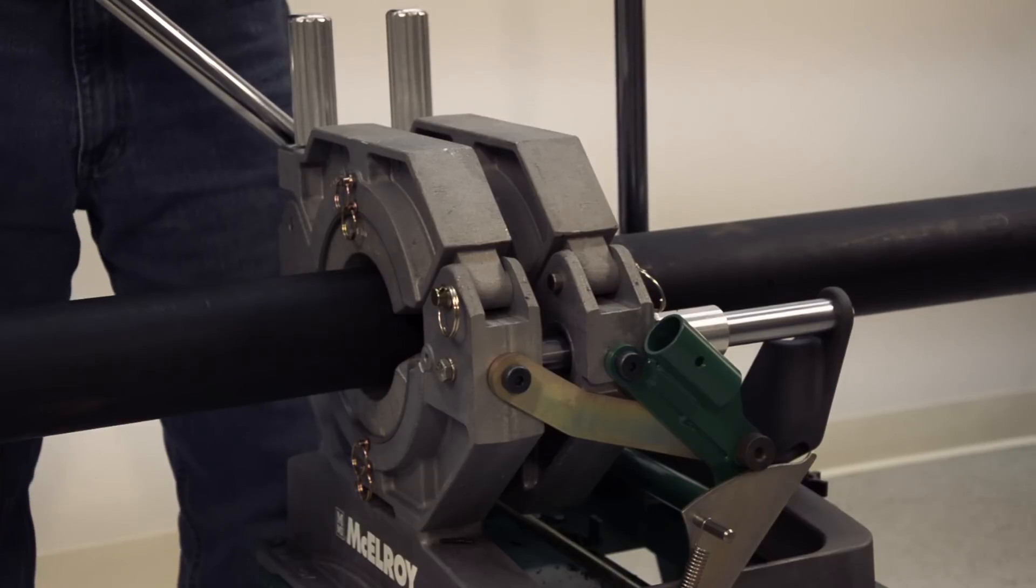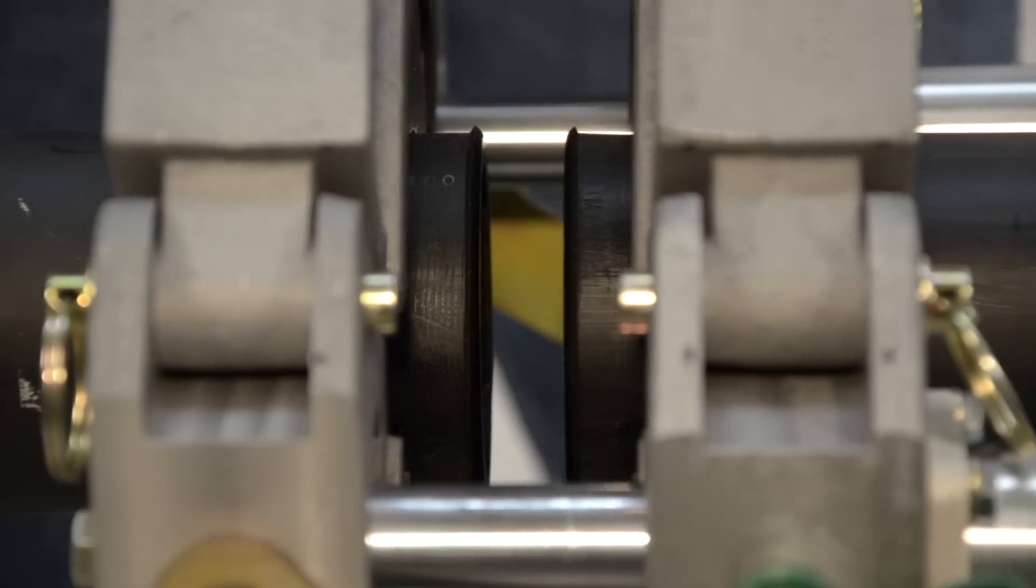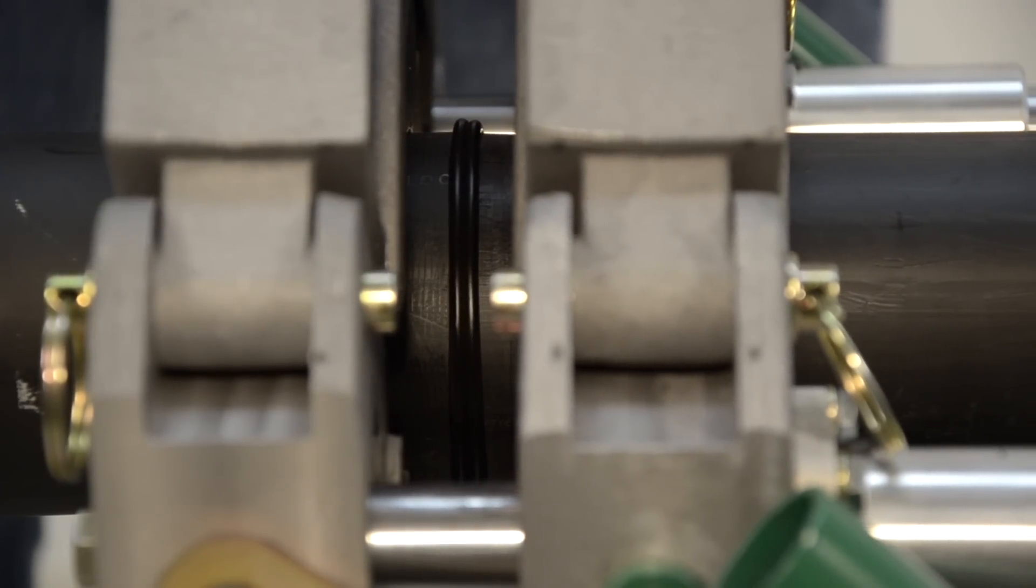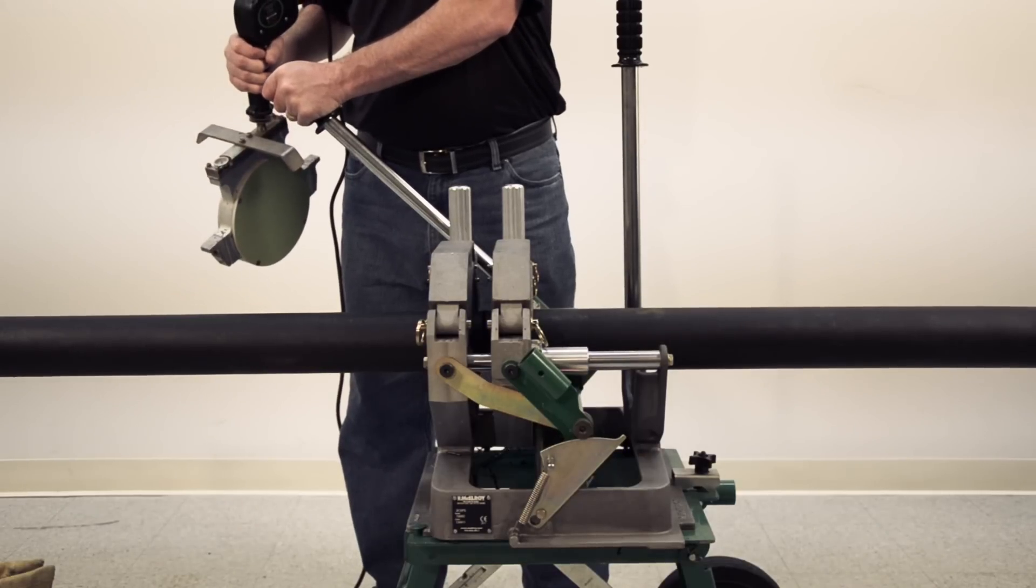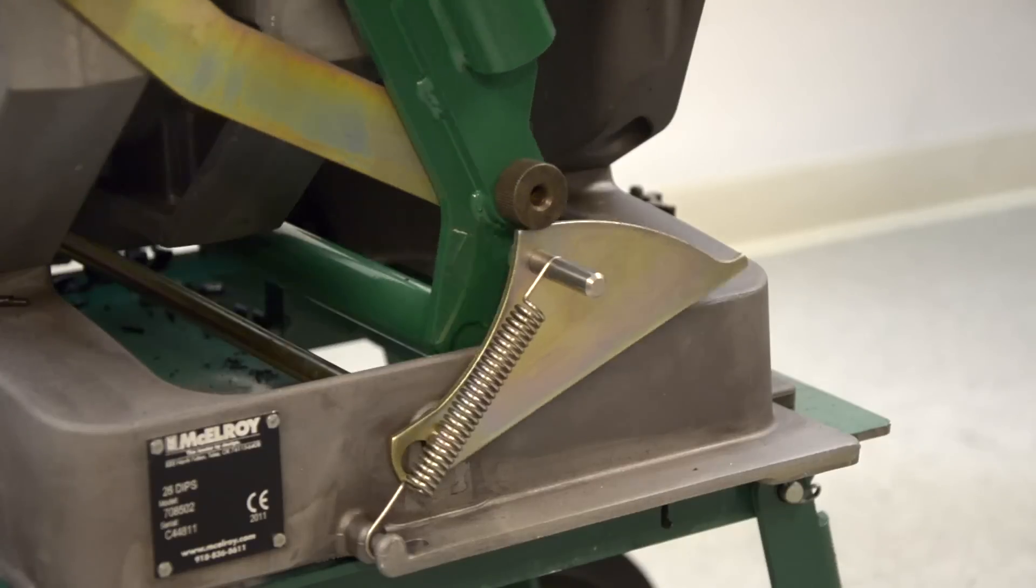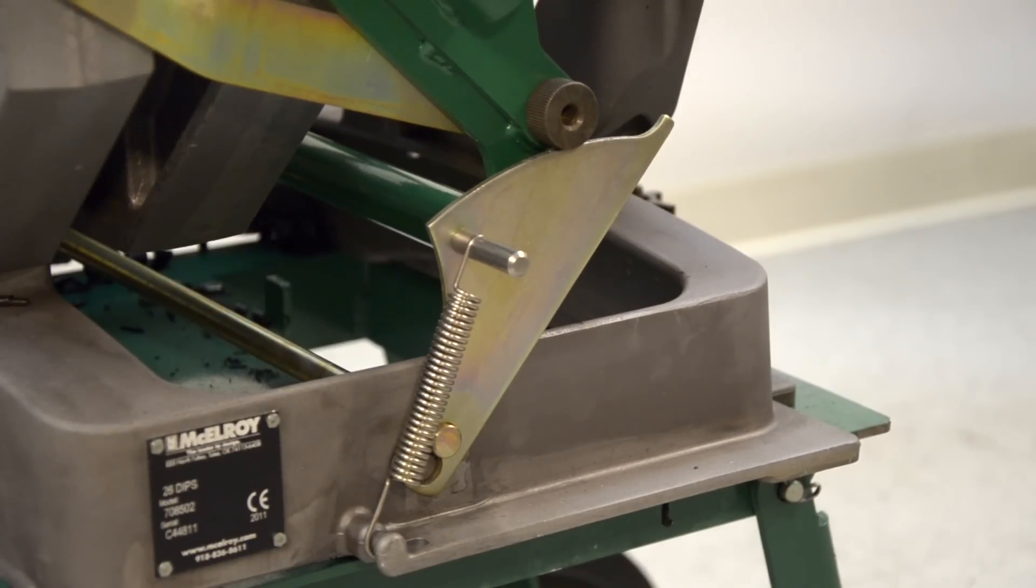Once contact of the pipe ends have been made, continue applying force until the bead rolls back and is touching the pipe on both sides of the joint. Continue to apply manual pressure on the handle for 10 to 15 seconds before engaging the cam lock and releasing the handle.